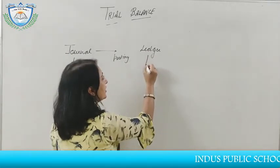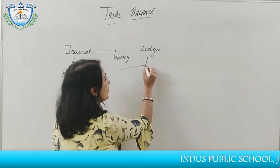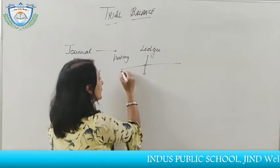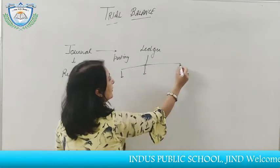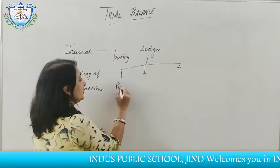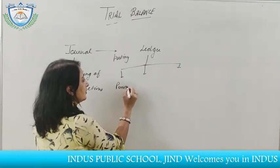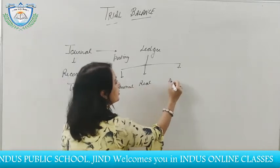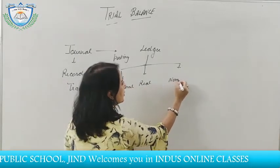The ledger contains three types of accounts: Personal, Real, and Nominal.